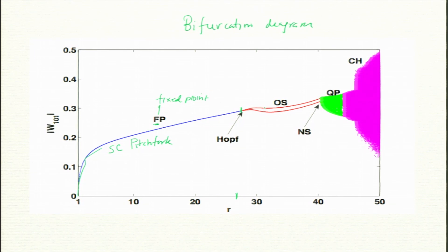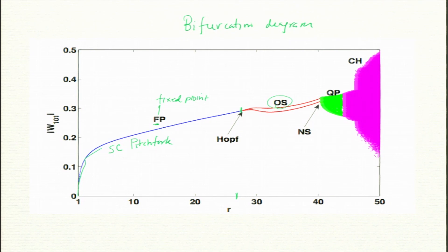These oscillations — labeled OS — are the oscillating asymmetric square pattern we discussed. This is what is observed in some experiments, and then the system becomes quasi-periodic.